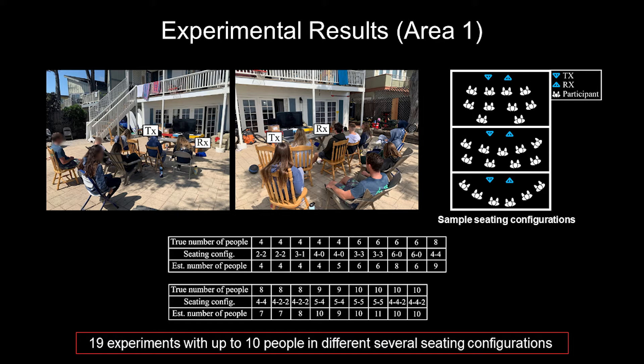In different experiments, people sat in several different seating configurations, some of which are shown in the figure here. This table shows the final estimate for the crowd count for all experiments, as well as the true number of people. We can see that the estimation error is zero or only one person in all experiments except only one, which shows a very good counting performance.